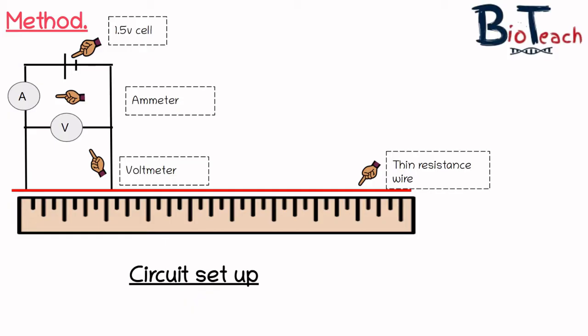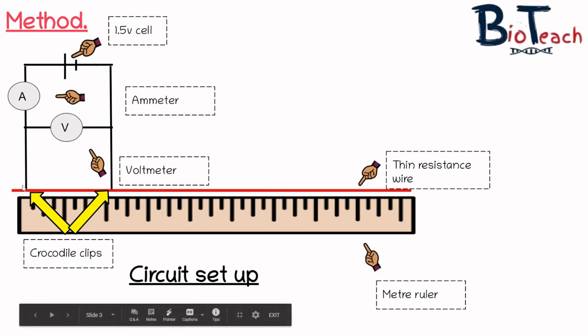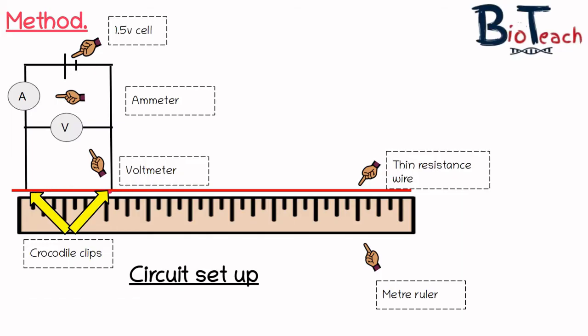You will see underneath the resistance wire I've also got a meter ruler set up. This will allow me to measure the length of the wire more accurately. When we set up the circuit you also need to have a couple of crocodile clips that connect the circuit to the wire. Let's say for example this is a 10 centimeter section that we're measuring - I'm going between here and here on my pointer. That's 10 centimeters.